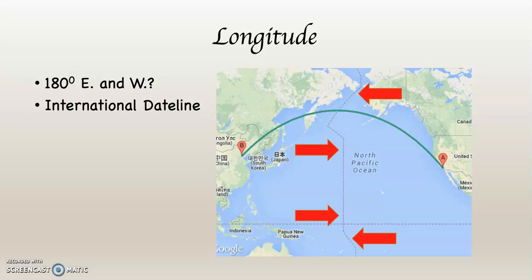Notice up in the north it makes a little bend around Siberia, and it makes another bend south of that around the Aleutian Islands. This is to keep these countries essentially in the same day. And if you look down to the south, you can see it makes another bend going around some island groups. We are going to operate under the assumption that the international date line is at 180 degrees east and west to make things easy.